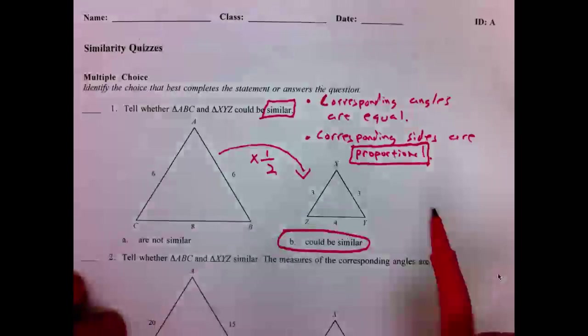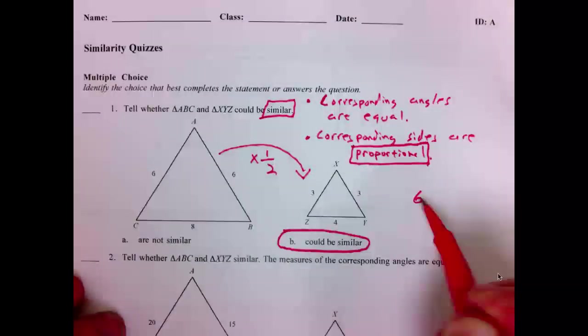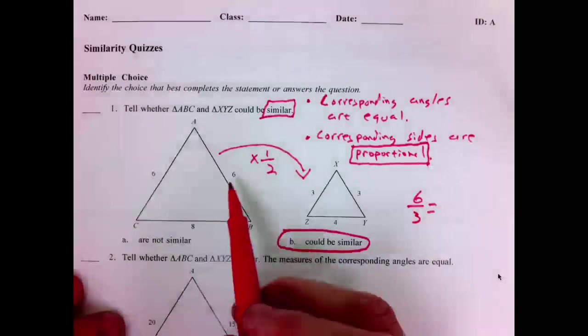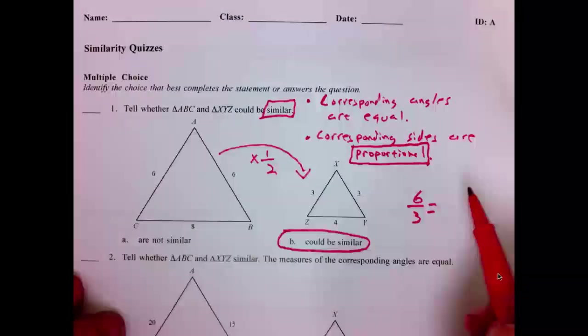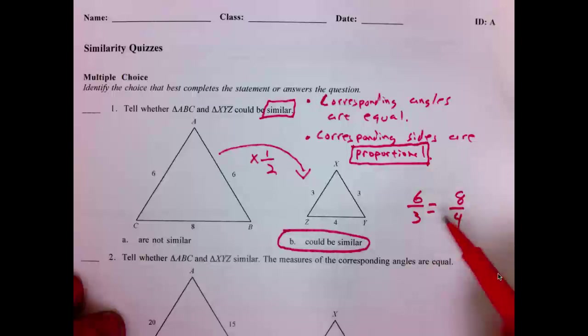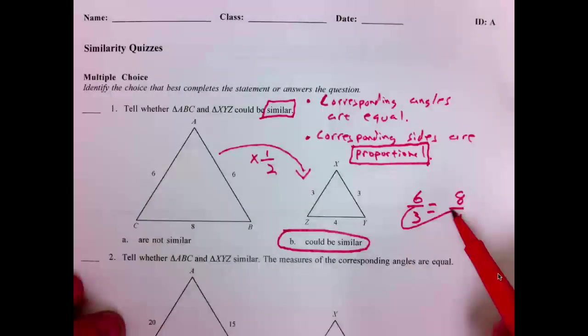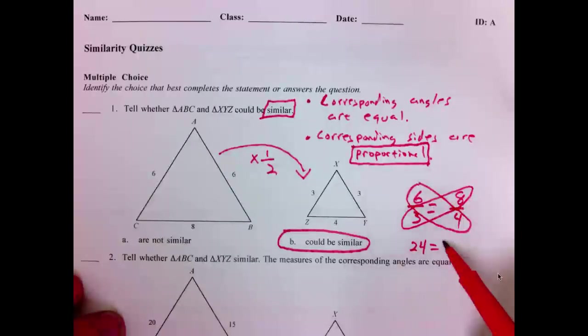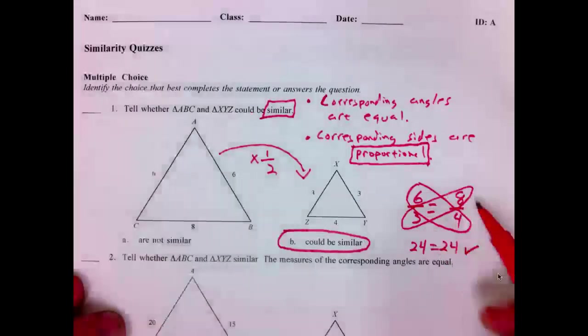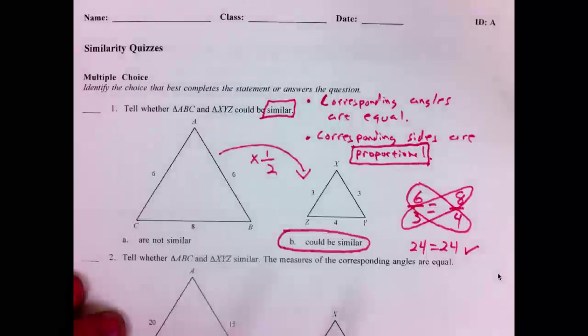We could also set up a proportion and verify that. I could say six over three is equal to six over three. We can clearly see that. That's the same fraction. Eight over four. Indeed, these two fractions are equal. Six over three is two. Eight over four is two. I can also verify with cross multiplication. Three times eight is 24. Six times four is 24. Twenty-four is equal to 24. This statement is also true. Therefore, these two triangles are indeed similar.